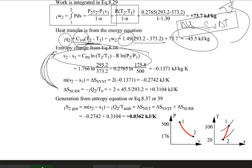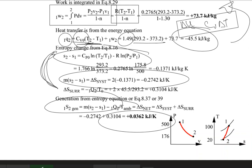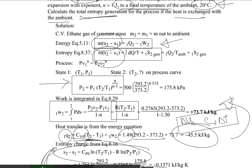For entropy generation, use the ideal gas entropy generation equation derived earlier. Putting all values into the entropy generation expression gives the total entropy generated for the process. If you have any questions, please let me know in the classroom and I will answer them. Thank you very much and have a nice time.